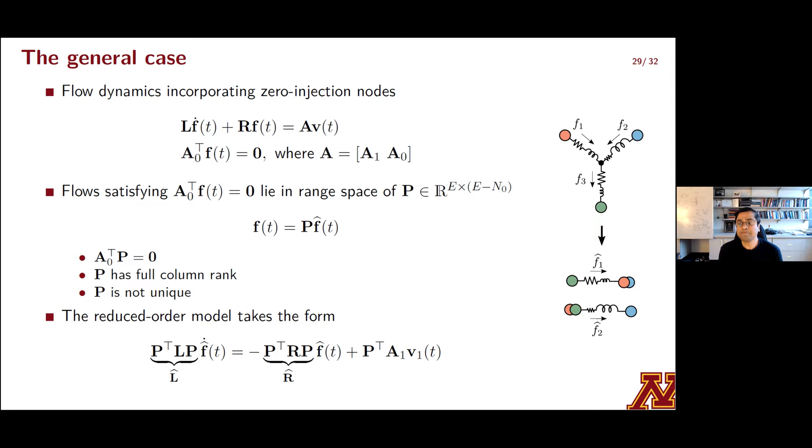For instance, its columns are clearly linearly independent. It has to be by construction. It will also satisfy the constraint that A0 transpose P is zero and that derives from the constraint on nodal injections being zero on the subset nodes N0. And then introducing P allows you to then write the line dynamics for these E minus N0 linearly independent ODEs and it takes the form that's shown at the very bottom of the screen. So what could be a good choice for P? It turns out that for instance, you can use a generalized eigenvalue decomposition to choose P in such a manner that the reduced model has diagonal L hat and R hat matrices.